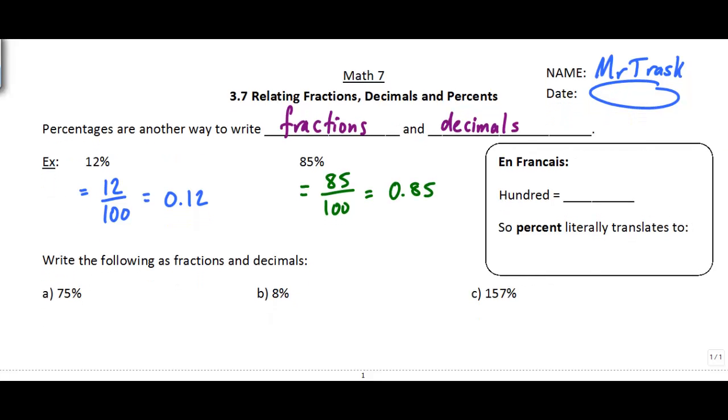The term percent actually is kind of a clue to what it means. In French, 100 is cent, written C-E-N-T. One way to remember that is there are 100 cents in $1. So the word percent literally means per, which means out of, and cent means 100. If we talk about a certain percent, we're talking about a ratio that is out of 100.